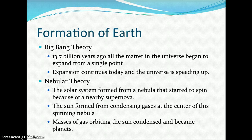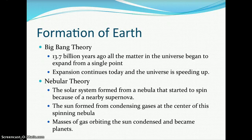The formation of our solar system came from a theory called the nebular theory. The solar system formed from a nebula that started to spin because of a nearby supernova. The sun formed from condensing gases at the center of the spinning nebula, and the masses of gases orbiting the sun condensed and became the planets.